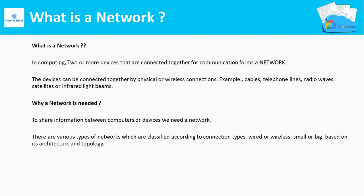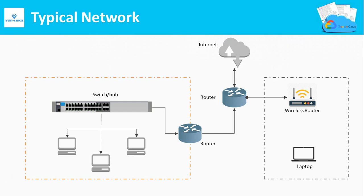Let us see what is a network. In computing, two or more devices that are connected together for communication forms a network. The connections can be physical, wireless, or both. We need a network to share information between devices. There are various types of networks classified according to connection types — wired or wireless, small or big — based on architecture and topology.